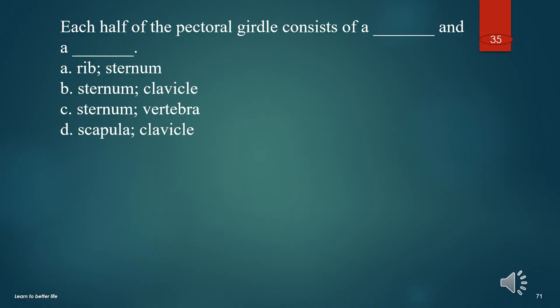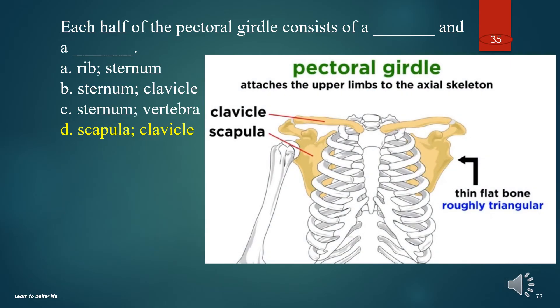Each half of the pectoral girdle consists of a what and a what? A. Rib, sternum. B. Sternum, clavicle. C. Sternum, vertebra. D. Scapula, clavicle. The answer is D. Scapula, clavicle.